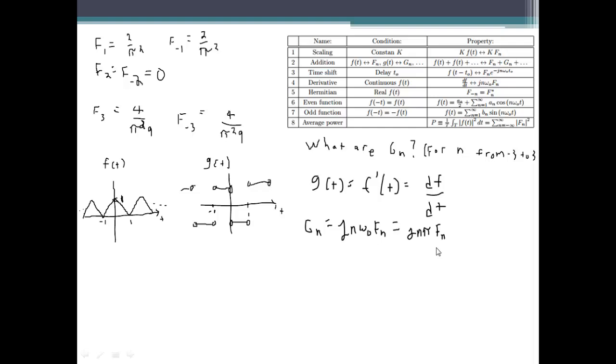Now if you remember from the last page, f_n was 0 for even multiples and 4 over n squared pi squared for odd multiples, so this is just going to equal 0 for n even and 4j over n pi for odd integers.